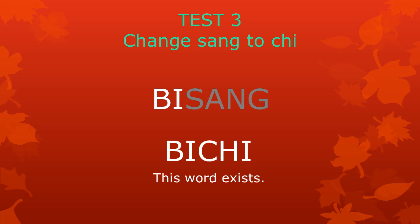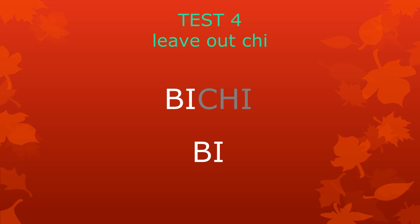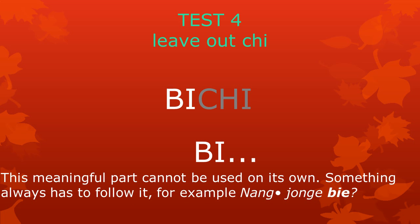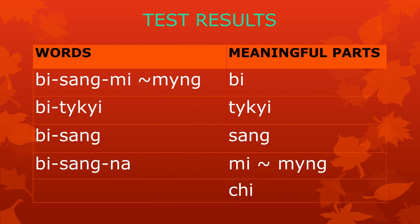Can we go one step further and leave out tekei? Let's try. We are left with bi. Is this a meaningful part? Yes, it is. When we leave out tekei, all we have left is the meaningful part bi. But there is something odd about it — this meaningful part cannot be used on its own; something always has to follow it, for example in nangjong e bi e. With our tests, we have discovered five meaningful parts: bi, tekei, sang, mi or meng, and qi.